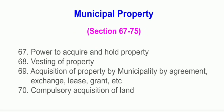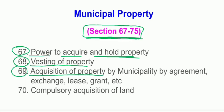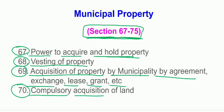This chapter covers sections from 67 to 75. Section 67 says power to acquire and hold property. Section 68: Wasting of property. Section 69: Acquisition of property by municipality by agreement, exchange, lease, grant, etc. Section 70: Compulsory acquisition of land.